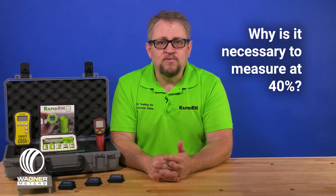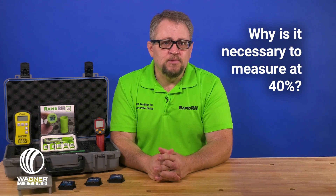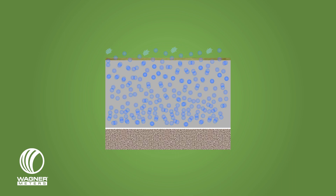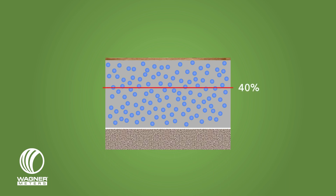Since we know that moisture testing on the surface isn't accurate and can ruin a flooring job, let's look at why testing in the slab at 40% is necessary for the best information. As the concrete dries, it starts to develop a gradient with more moisture on the bottom of the slab and less on the top, as we've earlier discussed. This is while the slab is open at the top to the environment. Once the slab is covered, all of the moisture redistributes and equalizes from top to bottom. The relative humidity measurement obtained at 40% depth in the slab prior to installation has been scientifically proven to closely resemble the relative humidity measurement at the surface once flooring is installed.